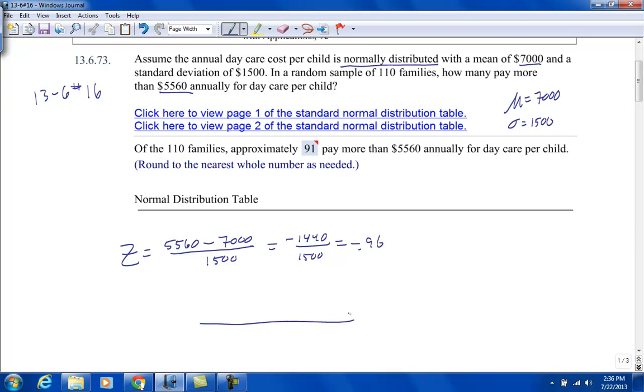So what that means is on our chart, here's our mean. We're right about here at negative 0.96. We want to know how many people are to the right of that value.